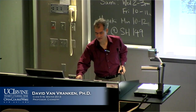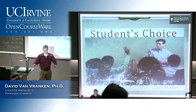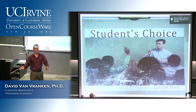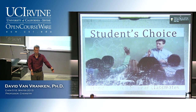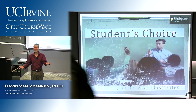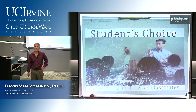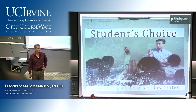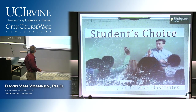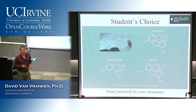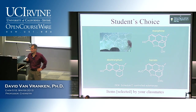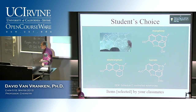I was walking in Albertson's yesterday, over those automatic checkout stands where you do your own checking out of groceries. I noticed on the floor there was a poster sticker thing that had organic molecules on there. And I said, that's cool — I can walk into my grocery store and they're showing me the structure of organic molecules. The sticker says 'student's choice' — items selected by your classmates.